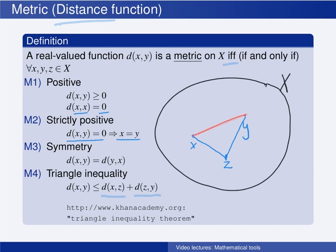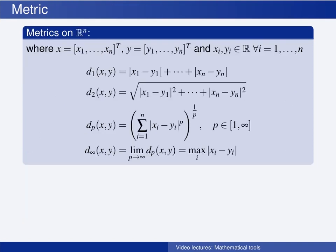If you need to brush up on the triangle inequality or any other mathematics used here, you may have a look at Khan Academy. On the set of all n-dimensional vectors with real-valued elements, we have several alternative ways of measuring the distance between two elements. The one you are most used to is probably the Euclidean metric. Let us consider the space of two-dimensional vectors since this is easy to illustrate.